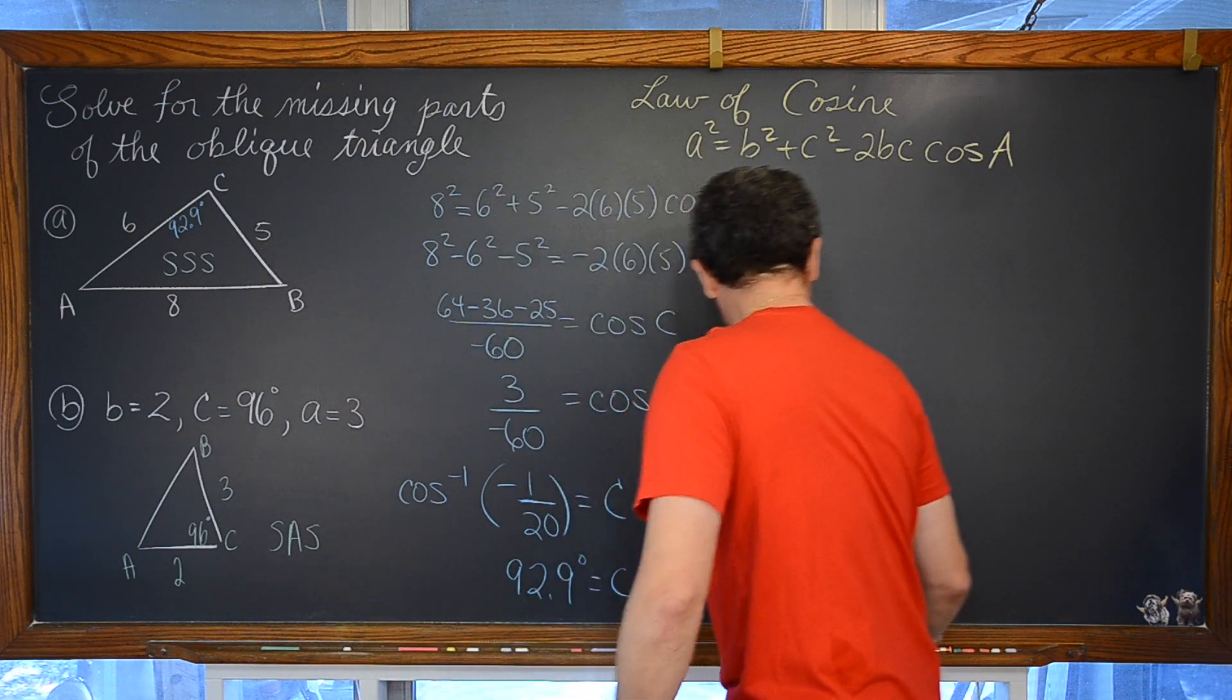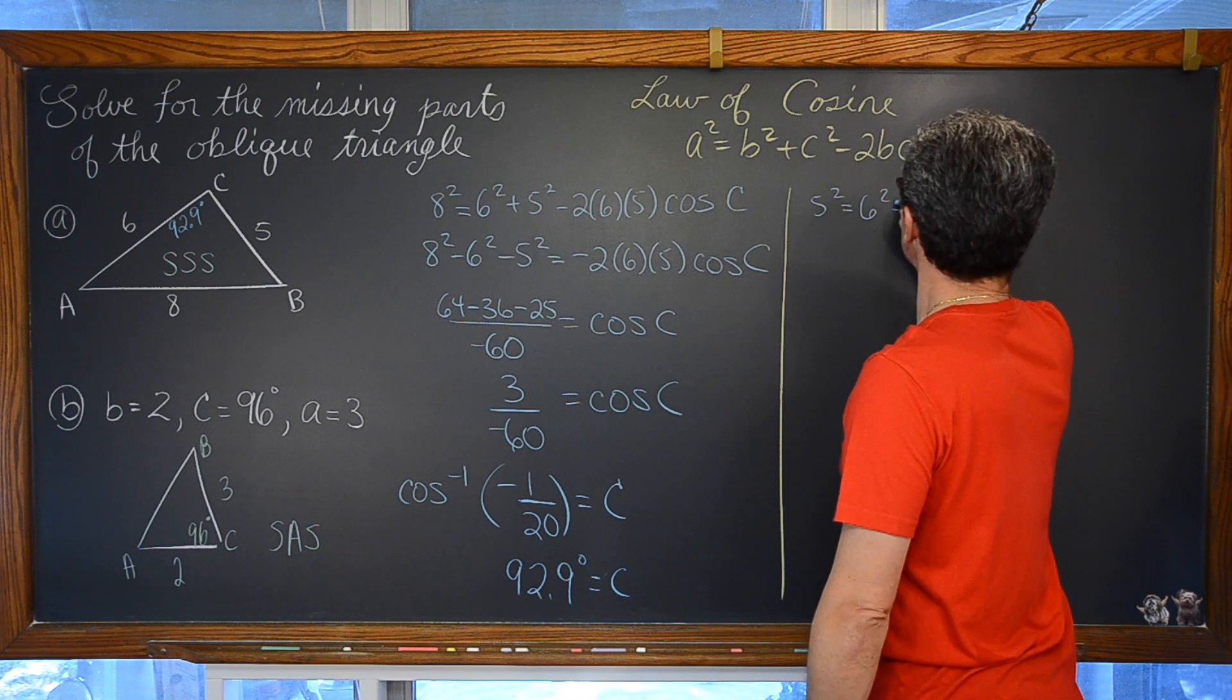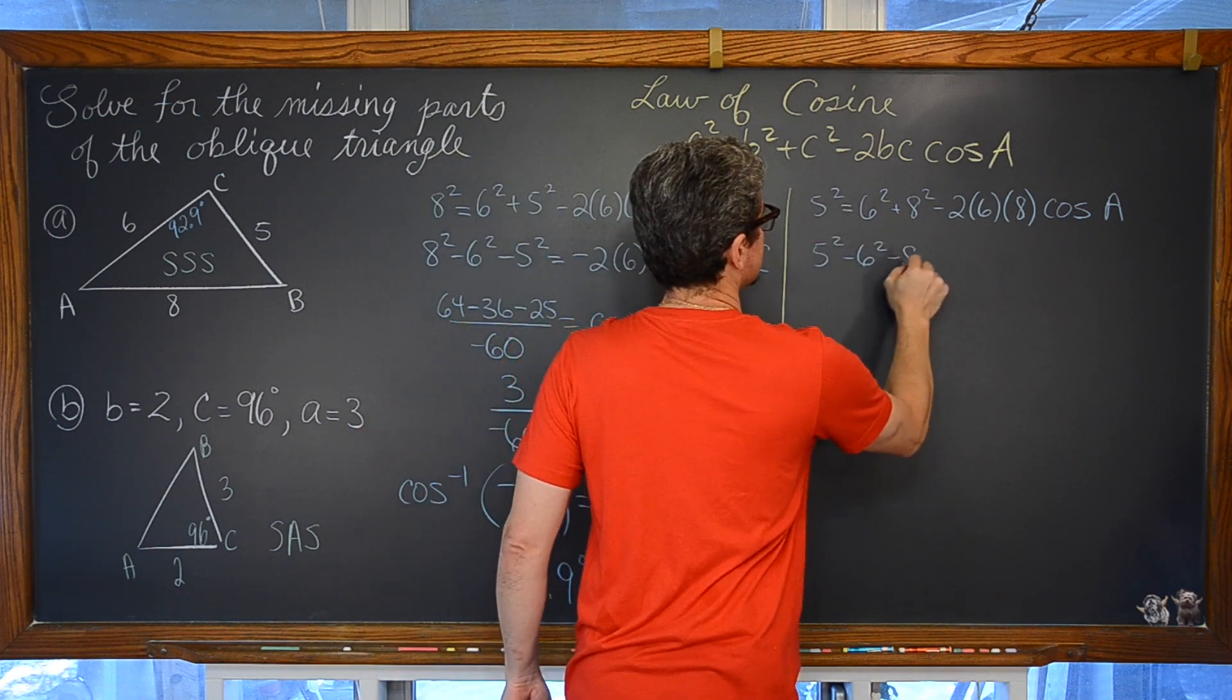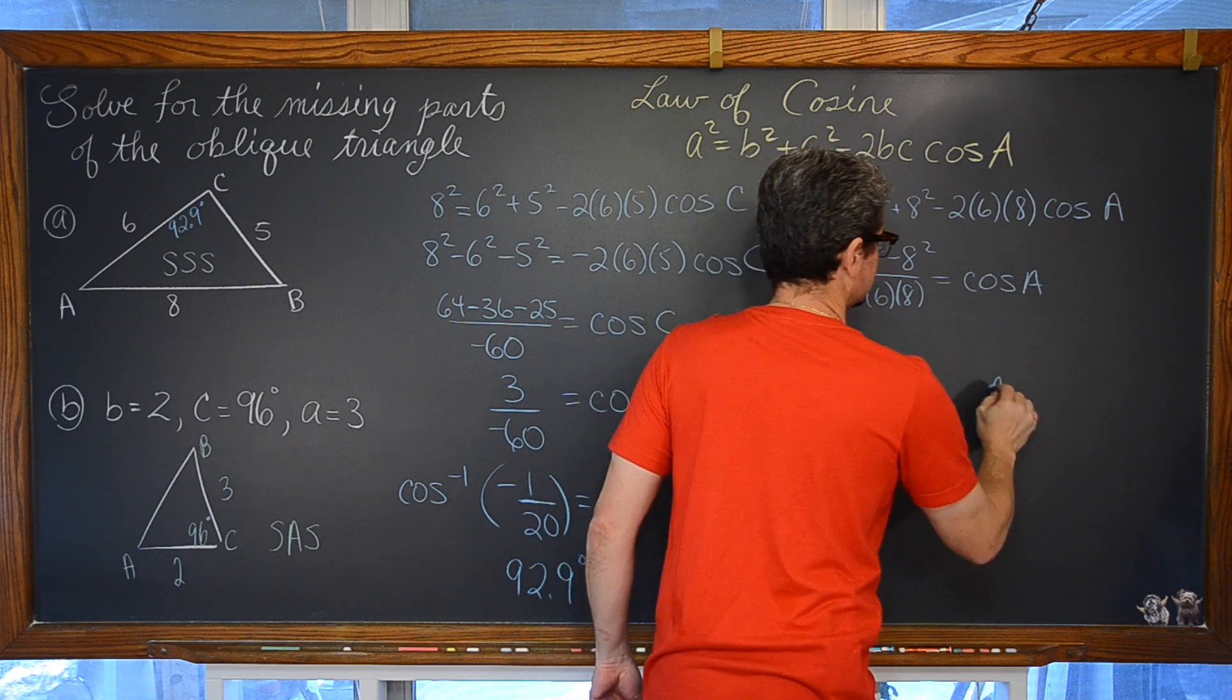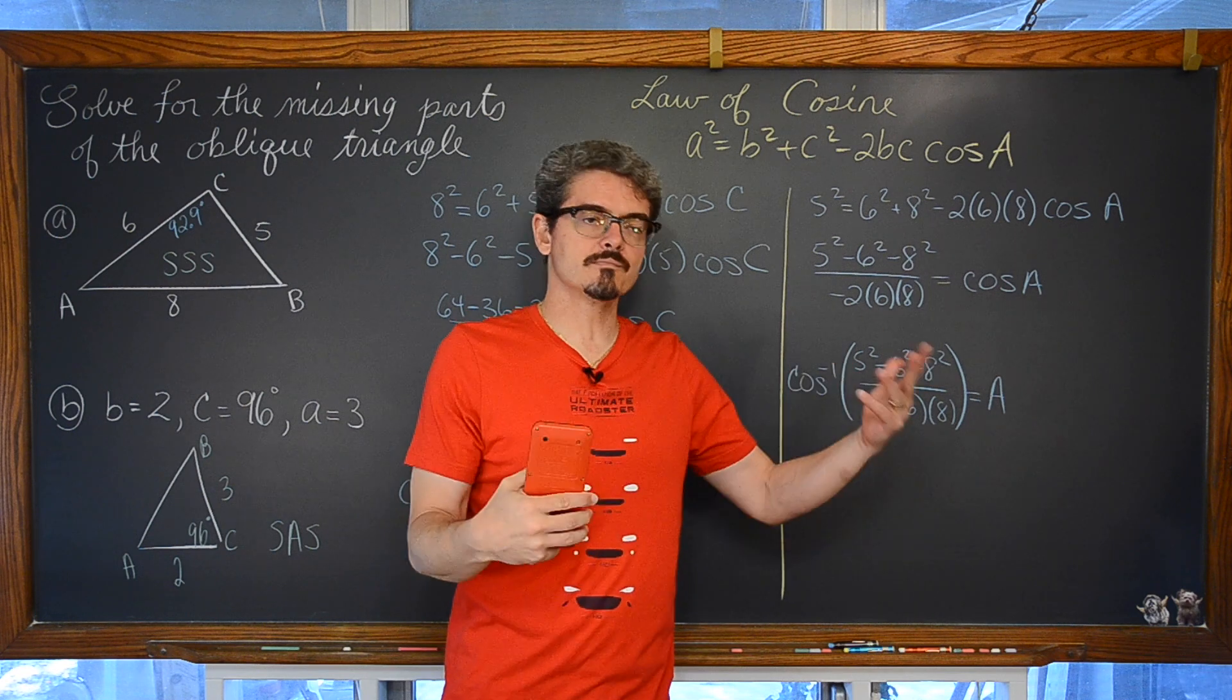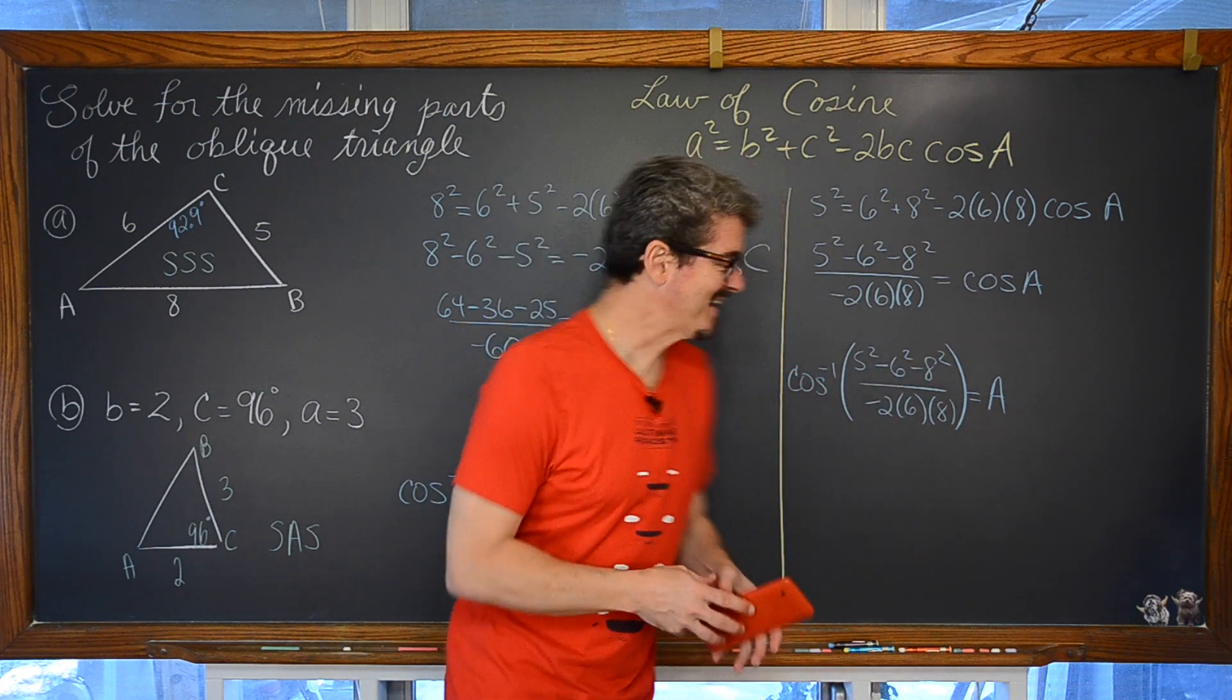We are going to review law of sine in the next problem though by the way, so don't worry about that. We have 5 squared is equal to 6 squared plus 8 squared minus 2 times 6 times 8 times the cosine of A. And same thing, we are going to have 5 squared minus 6 squared minus 8 squared over negative 2 times 6 times 8 is equal to the cosine of A. And another cautionary note with these problems, a little bit of round off error can affect and spiral into larger and larger sort of small errors becoming large errors as you work through the multiple parts of your triangle.